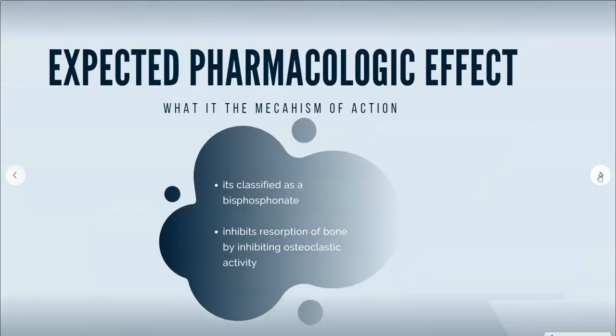Let's talk about the expected pharmacologic action or effect. What is the mechanism? The first thing we need to know is that this drug is classified as a bisphosphonate. Bisphosphonates are any group of drugs used to limit the loss of bone density in conditions such as osteoporosis and bone cancer. This drug also inhibits the resorption of bone by inhibiting osteoclastic activity.